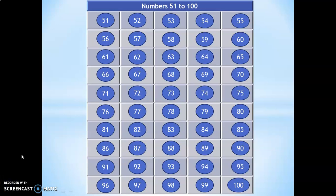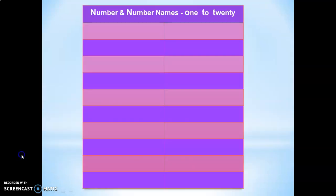Now that we are done with numbers 1 to 100, let us move on to the concept of number names. It is always important to make children master the number names from 1 to 21 because only here we have a new spelling for each number. Once children are familiar with these number names, it becomes easy for them to move on to the next step. Now, the children can say the number names of numbers 1 to 20 as they appear on the screen.